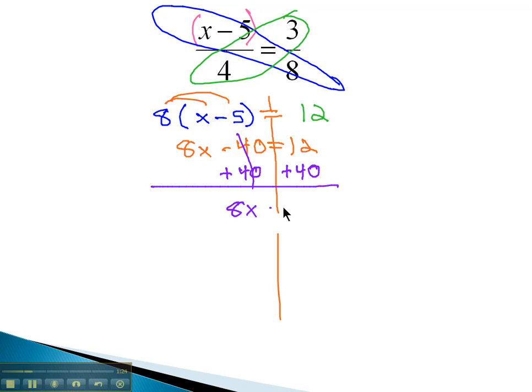That gives us 8x equals 52, and then finally to get x alone, we divide both sides by 8 to get our final answer for x. And dividing 52 by 8, we get 6.5.